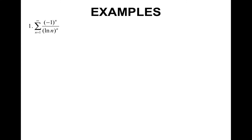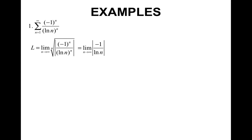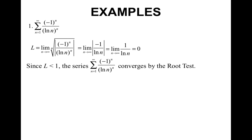Let's look at some examples of the root test. We have the series of (−1)ⁿ over (ln n) to the n power. I rewrite this by taking the nth root of the absolute value of the sequence. The nth powers and nth roots cancel, leaving me with the absolute value of negative 1 over the natural log of n. Since I'm taking absolute value, the negative 1 is irrelevant. So I'm taking the limit as n approaches infinity of 1 over ln n. Plugging in infinity gives 0. Since the limit is less than 1, the series converges by the root test.